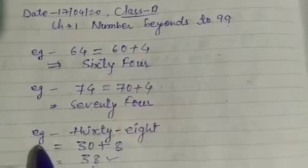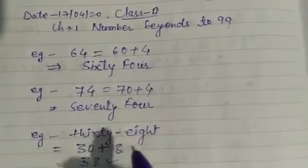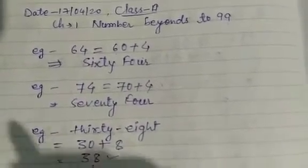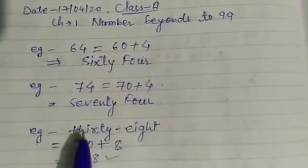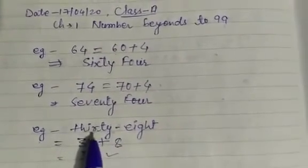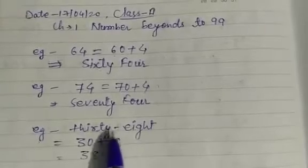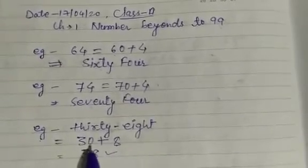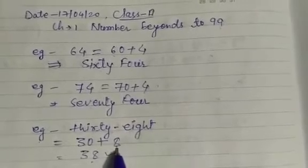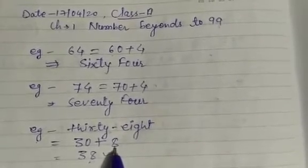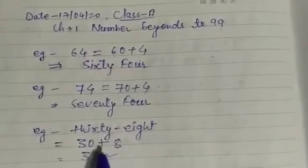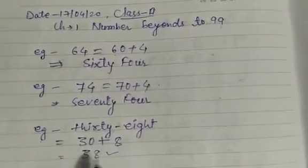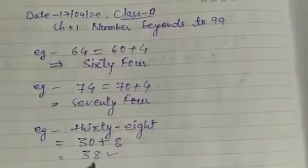Now I am taking the third example: how can we write words in number? We have taken the words for 38. As you can see, 30 can be written as 'thirty' and 8 can be written as 'eight'. Now we will add these numbers, so 30 plus 8 is 38.